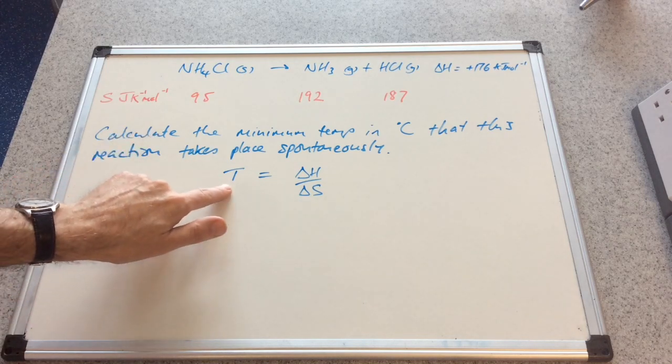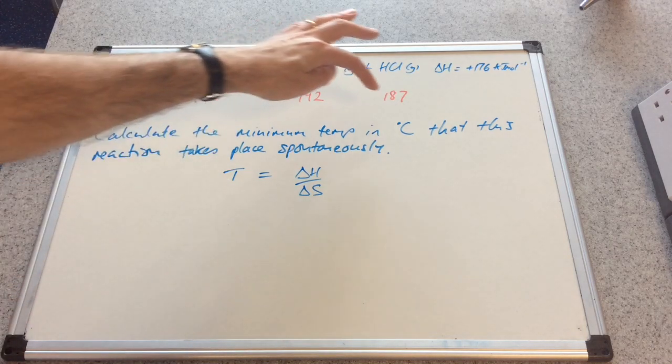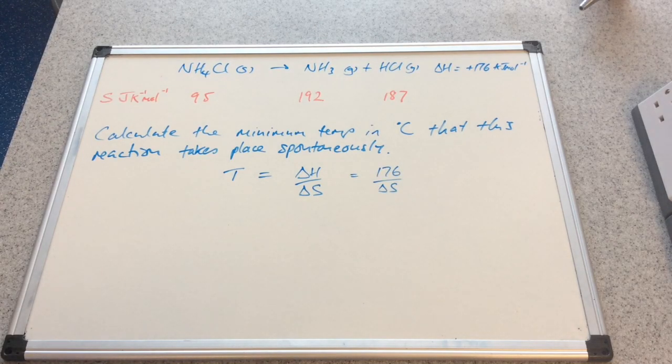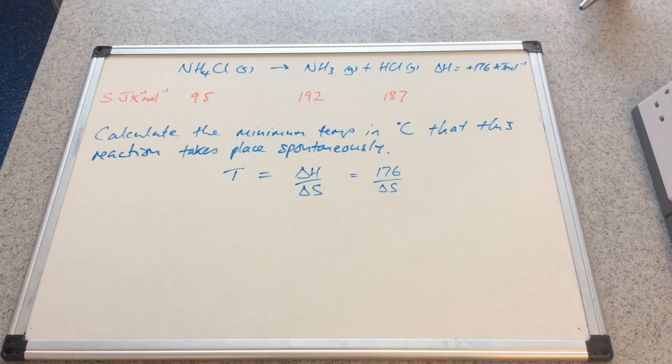But remember the temperature is going to come out in kelvin, they want it in degrees C so we're going to do a conversion at the end. We've already got delta H, it's 176, but we haven't got delta S. All we've got are the entropy values for the terms in the equation. How do we work out delta S?